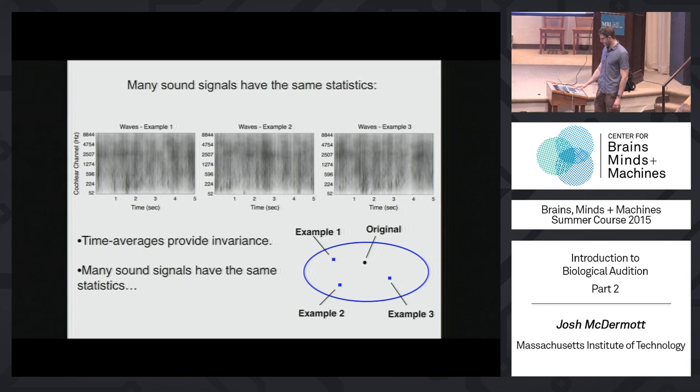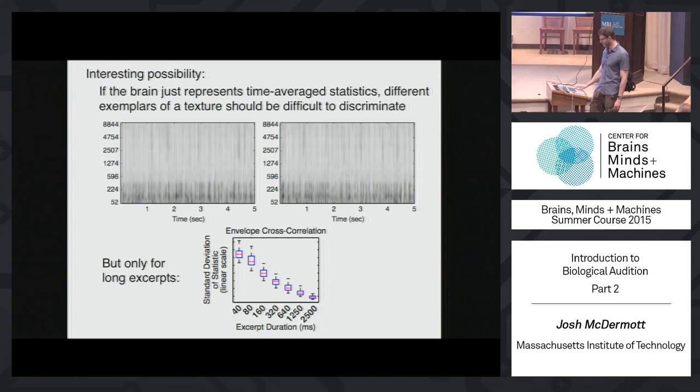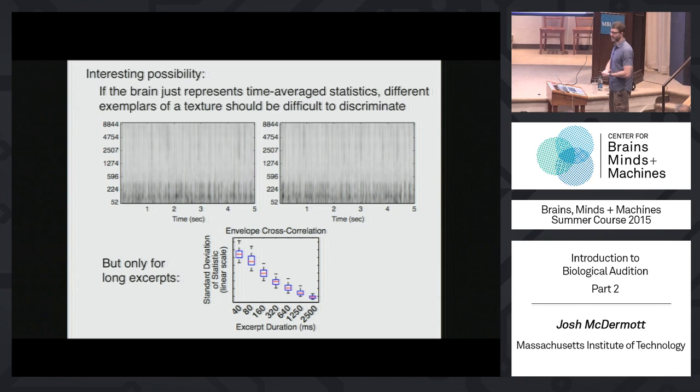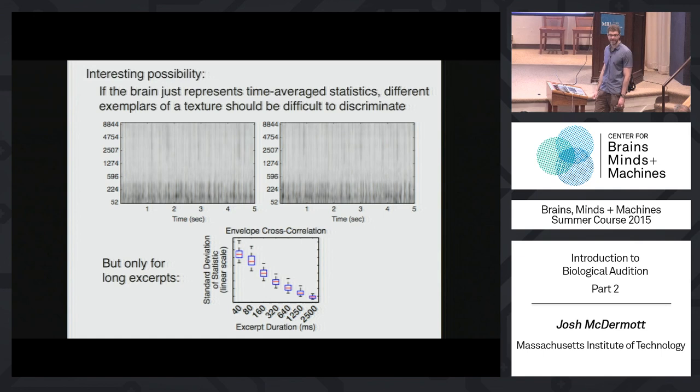The fact that you have all these different signals with the same statistical properties raises an interesting possibility: if the brain is just representing time-averaged statistics, we would predict that different exemplars of a texture ought to be difficult to discriminate. This is an experiment that attempts to test whether you are in fact representing these textures with statistics that summarize their properties by averaging over time.